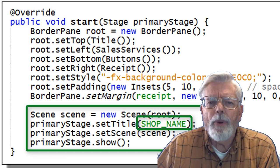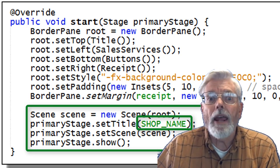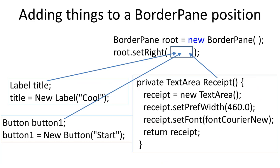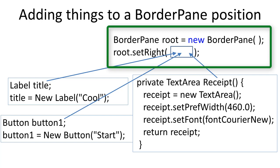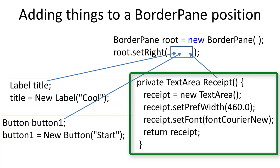ShopName is defined as a constant at the top of the program and is currently set to the string "Dan's Computer Shop." If you update the program, you can change it to show your name instead. This example shows the creation of a border pane named Root. The next line shows how to place something into the right position of the border pane using Root.setRight. A control such as a label or button can be placed in any border pane position. More complex panes can also be placed in any position. A Java method can also be called to place items in a border pane position as long as the return data type is something the border pane can accept. In this example, the method Receipt is called which instantiates a text area, updates the text area, and then the return statement sends the text area back to be used by Root.setRight.